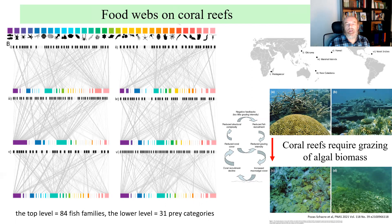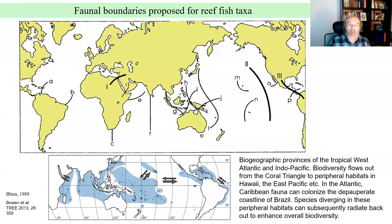Coral reefs require grazing of algae biomass, unless they are growing in an extremely low-nutrient environment. If algae successfully overgrow the reef, there is a switch to an alternative steady state of algal cover, which no longer supports fish diversity, including the fish grazers that would normally reduce the algal cover.